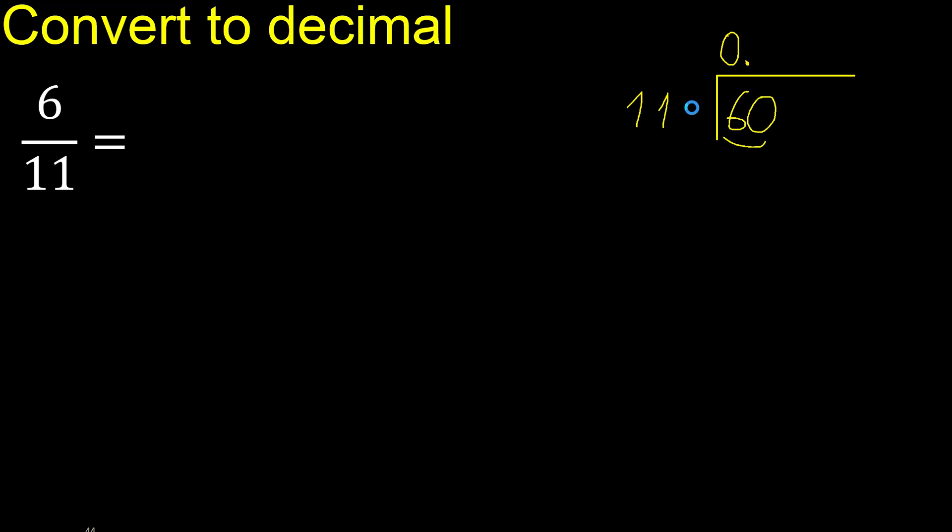60 is not less. Therefore, 11 multiplied by which number is nearest to 60 but not greater? 11 multiplied by 6 is 66, which is greater. Therefore multiply by 5. 11 multiplied by 5 is 55, not greater. 60 minus 55 is 5.